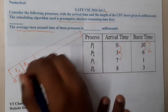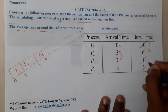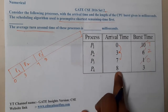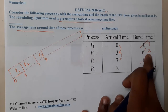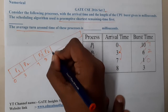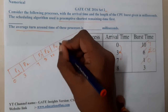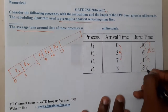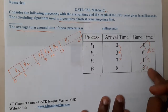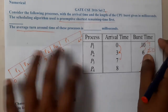At 7 milliseconds, P3 arrives with a burst of only 1 millisecond, so P3 executes and completes immediately. After that, P4 arrives at 8 milliseconds with a burst of 3, but P2 still has 2 milliseconds remaining, so P2 continues first. Once P2 is done, P4 gets its 3 milliseconds, and finally P1 runs to completion at 20 milliseconds. The total checks out to 20, so no silly mistakes.